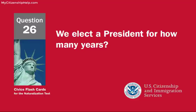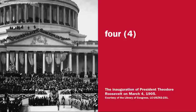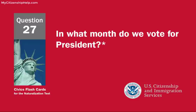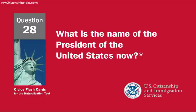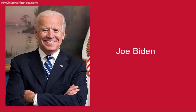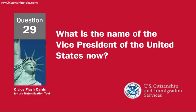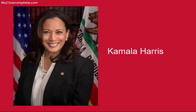We elect a president for how many years? Four. In what month do we vote for president? November. What is the name of the president of the United States now? Joe Biden. What is the name of the vice president of the United States now? Kamala Harris.